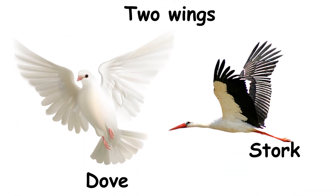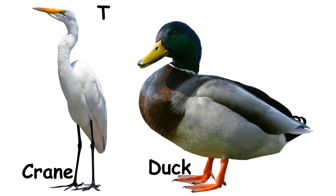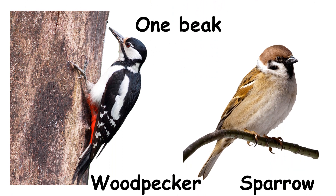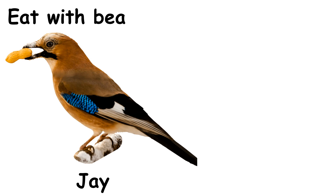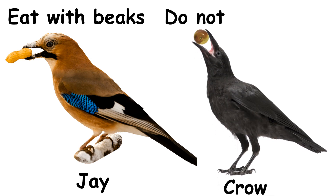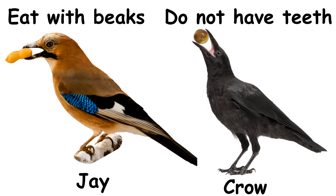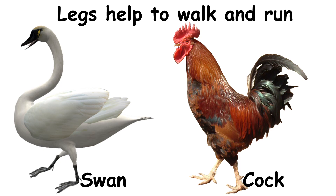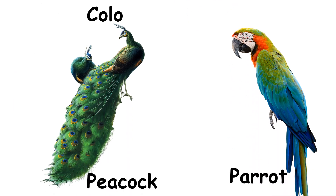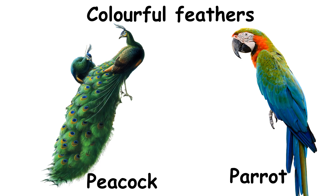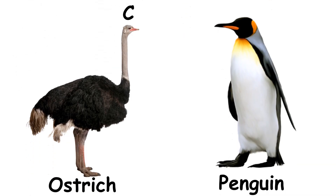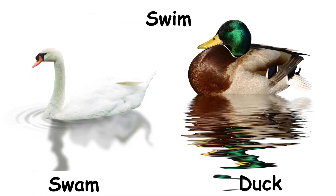Birds have two wings, two legs and a beak. They eat with the help of their beaks. They do not have teeth. Their legs help them to walk around and run. Birds have colorful feathers. Some birds can fly and some birds cannot fly. Some birds can swim.